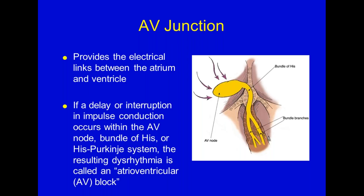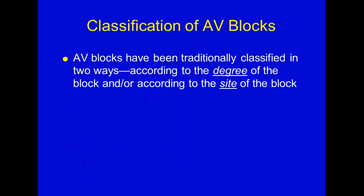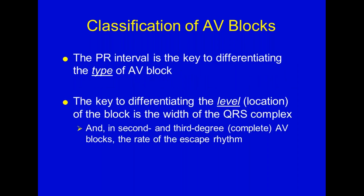The first degree block looks like a sinus rhythm pretty much all the way through, with the exception that the PR interval will be greater than 0.2 seconds. AV blocks are classified two ways: according to the degree of the block or the site of the block - where in the AV node it's getting blocked, and how severe it is. We can have a minor block like first degree, or a severe block like third degree. We'll save third degree for later and cover first degree and the two second degrees today.